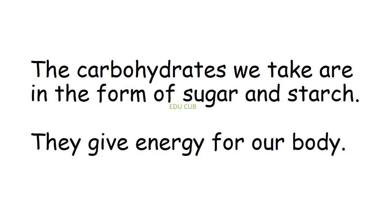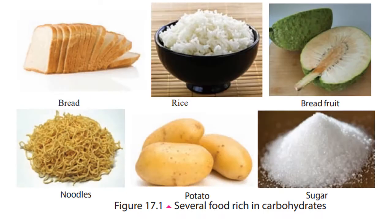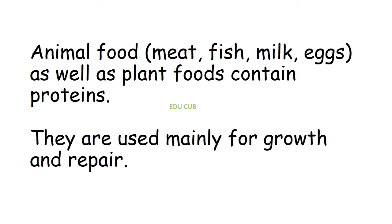The first nutrient is carbohydrates. The carbohydrates we take are in the forms of sugar and starch, and they give energy to our body. Several foods rich in carbohydrates are bread, rice, breadfruit, noodles, potato, sugar, hoppers, shrimp hoppers, jackfruit, types of yams, and types of grains.